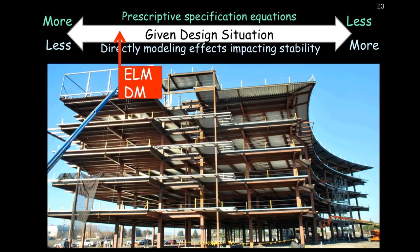Here's my first example using this sliding scale. It's a multi-story building with fairly orthogonal geometry — nice curves and decent overhangs, but by and large this kind of structure would lend itself quite well to the prescriptive specification equations. It's a fairly routine structure for which either the effective length method works well, or if you're having trouble with effective length factors or just want to get out of the effective length world, this is also a great one for the direct analysis method.